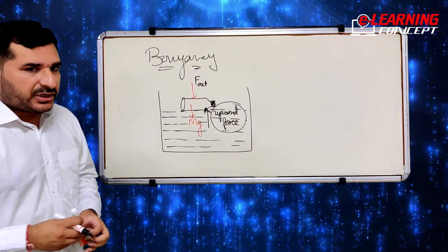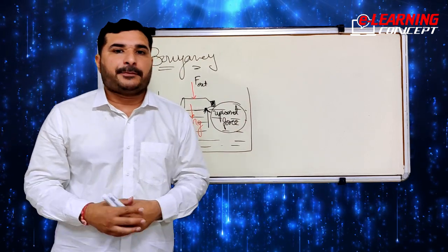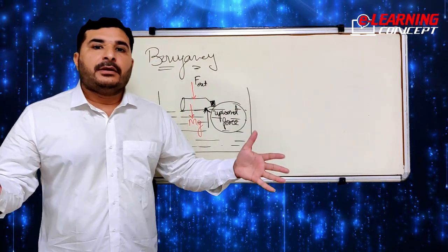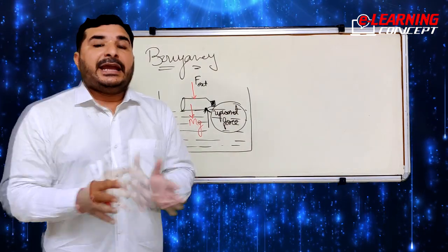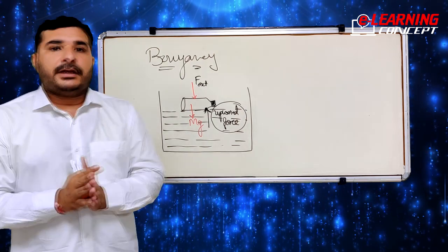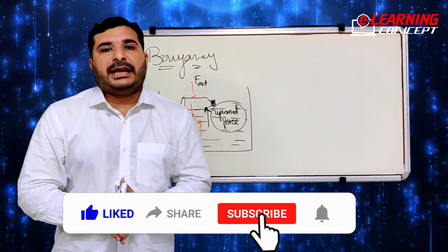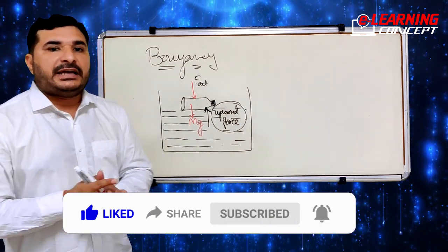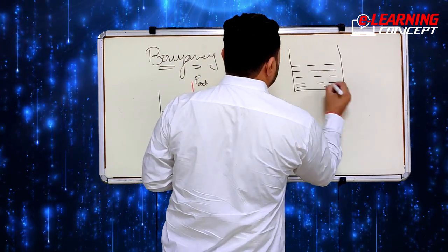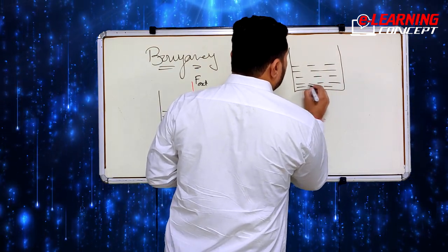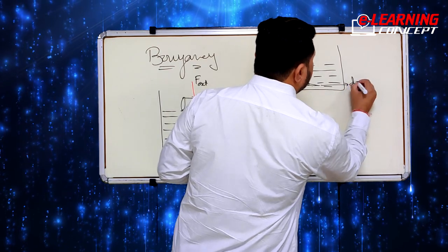Now a question arises: if we take an iron nail, it sinks in water. But a large ship made of the same iron floats in the ocean. If both the nail and the ship are made of iron, why does one sink and the other float? In the activity, when an iron nail is placed in a container of water, it sinks because the density of iron is more than the density of water.